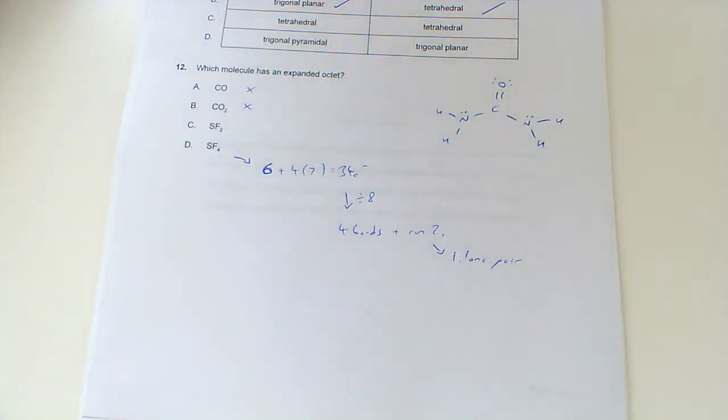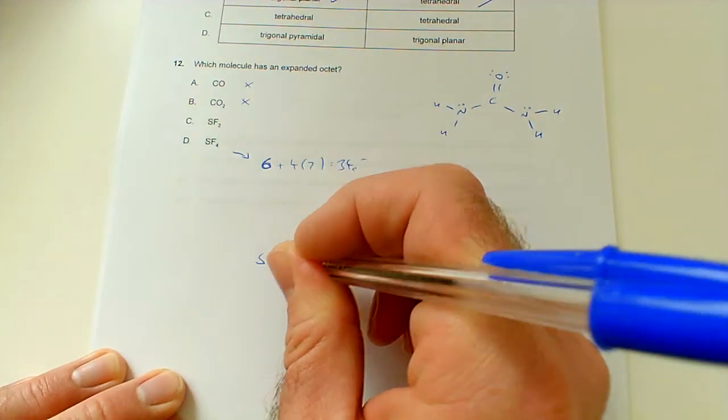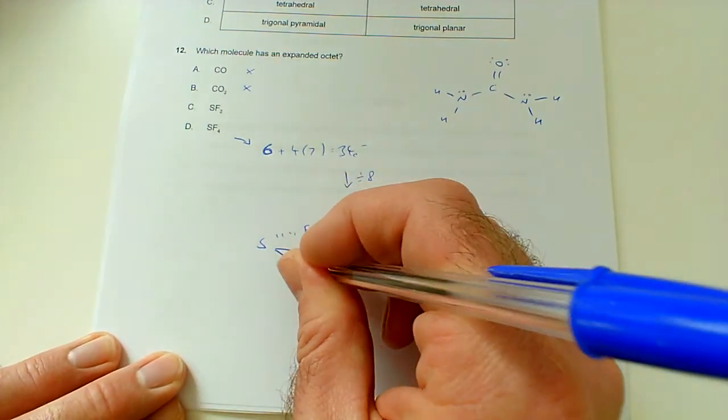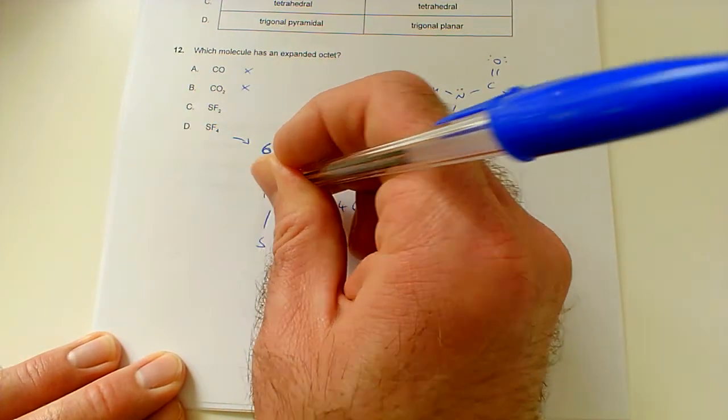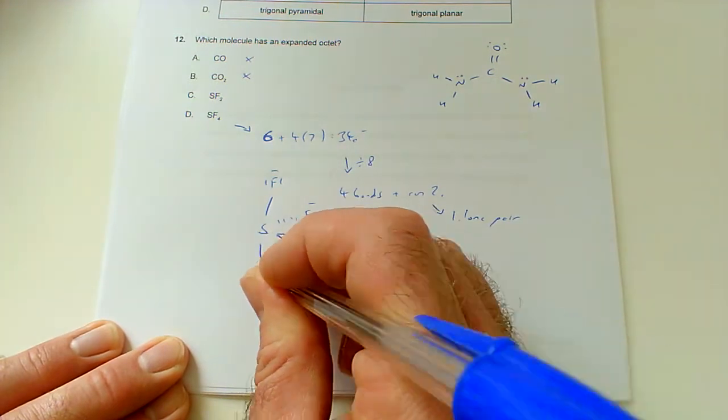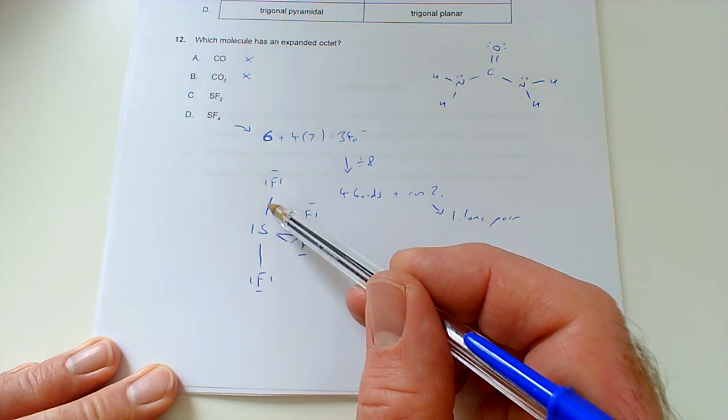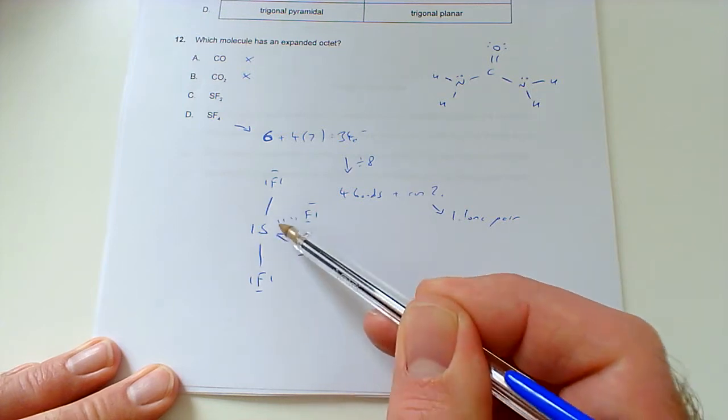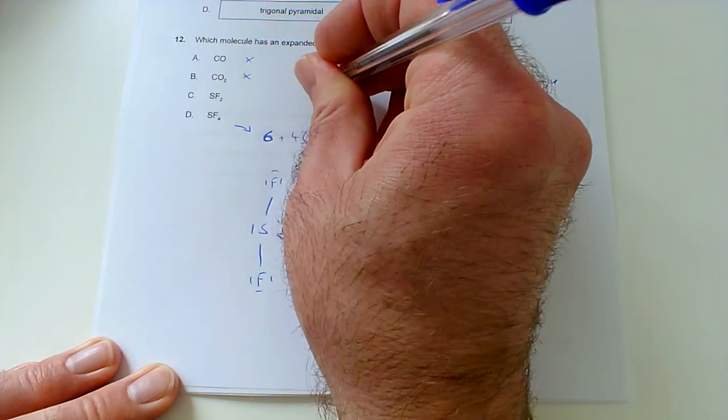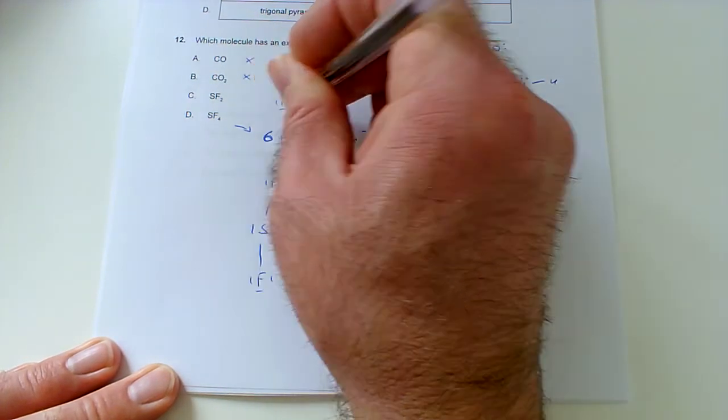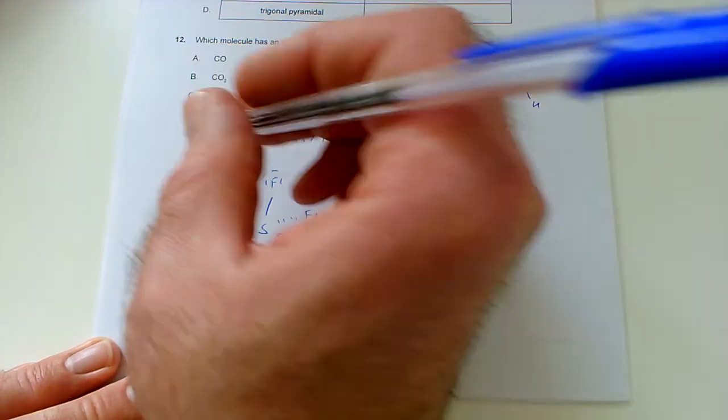We've got a remainder of two, so that is one lone pair. So our sulfur has got four bonds coming off it, which makes sense - there's four fluorines, and it's also got one lone pair as well. Here's the lone pairs on the fluorines, and there's also a lone pair on the sulfur there. So the sulfur has actually got ten electrons around it, so it's got an expanded octet. Whereas in SF2, it would just be this basically. Here, sulfur is obeying the octet - it's got eight electrons around it. So we want to go with D.